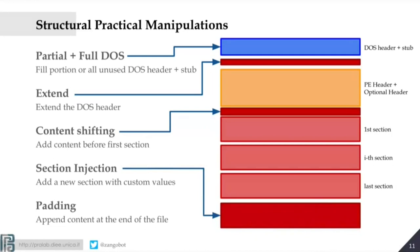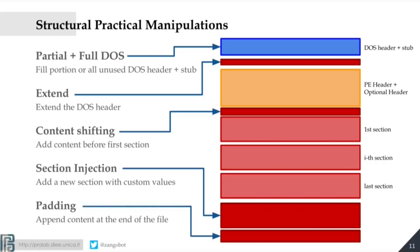Similarly, the PE header and optional header have an offset to the sections — the code. So again, shifting that offset gives you another space to store information. Another thing you can do is add another section — a fake code section that is never executed — and you can ask the operating system to either load it in RAM or not. This gives you another chunk of bytes to inject content. Lastly, you can just pad the file: take the file and add things at the bottom. All of these are functionality-preserving because they exploit ambiguities of the file format.